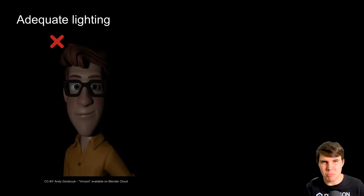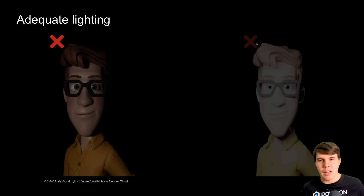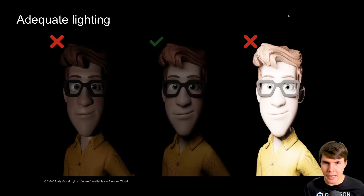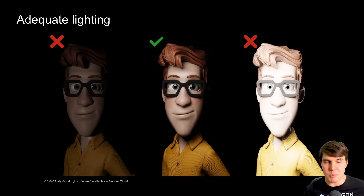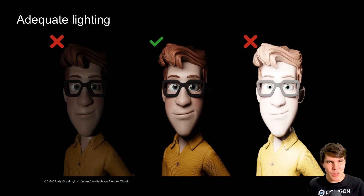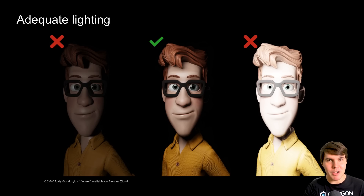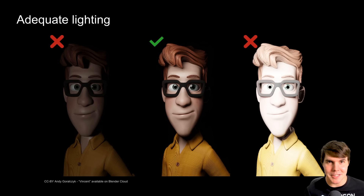First, adequate lighting is a pretty simple concept. It's just making sure you've got the right amount of light. Most of us would agree that under-lit is wrong, and over-lit is wrong too — the correct amount is somewhere in the middle. But because everybody's monitor is a different brightness, it's often hard to know what the correct brightness actually is, which is why a finished render can look good on your monitor but too dark or too bright on your phone.